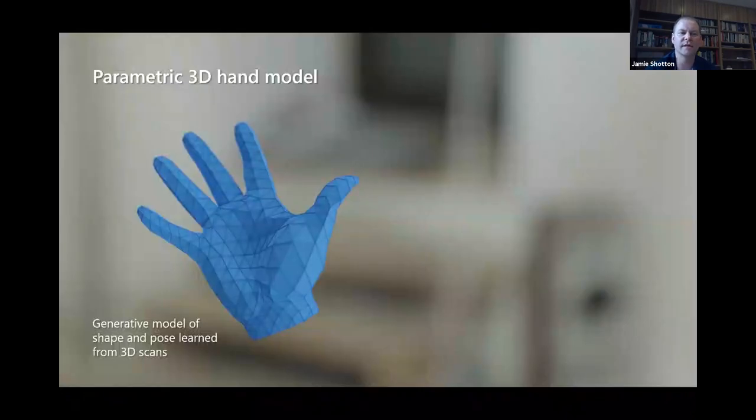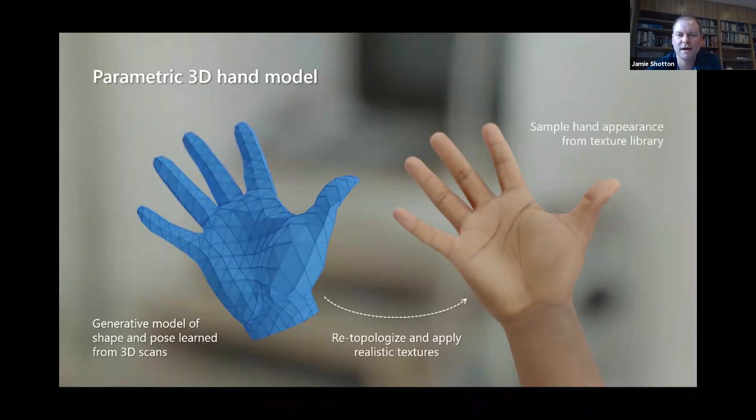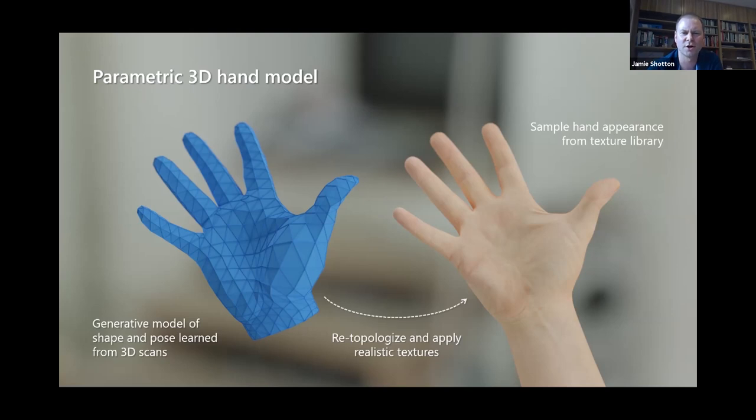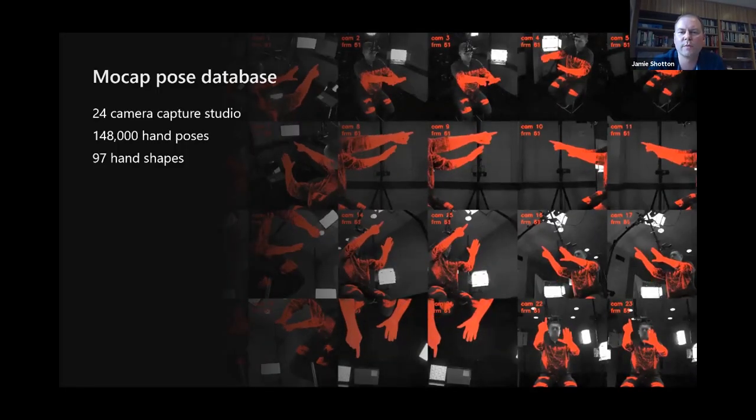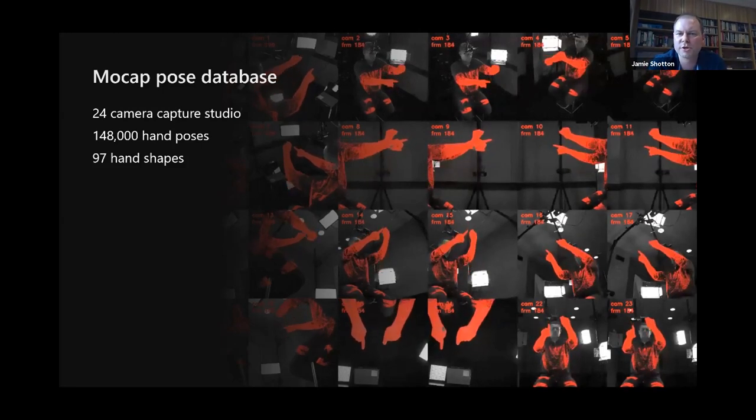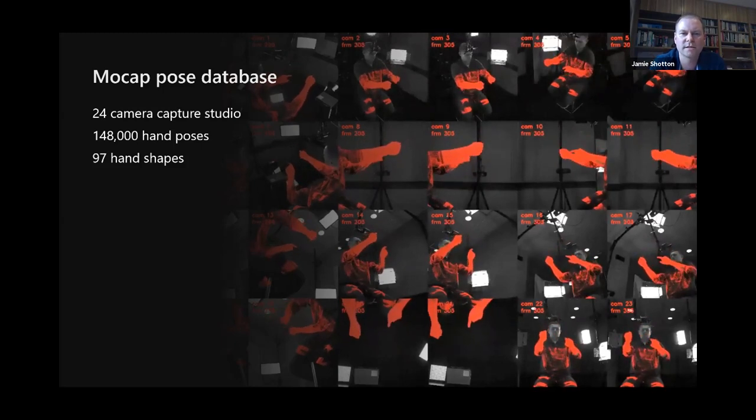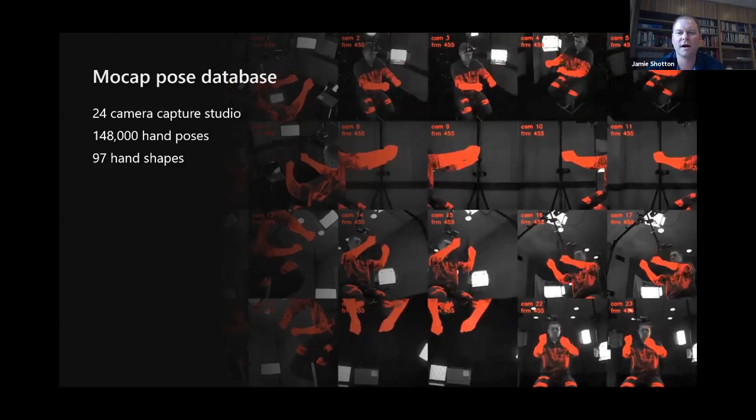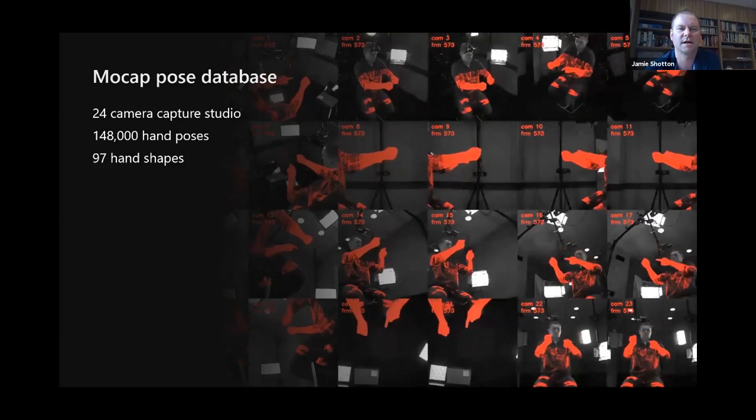And the really nice thing is you can start with the exact parametric hand model that you're tracking against and use that as the basis for generating your training data. And there's several ingredients. First of all, you need to be able to texture this. And again, we can texture this with a diversity of textures from a texture library. Next, you need to be able to pose this realistically. And this is not quite as easy as just randomly permuting the joint angles in your model. You need to do this with care. And so we needed some motion capture data of hands and for this, because motion capture for hands is very hard to come by, we had to create our own capture studio, multi-camera rig. The red points here are overlaying the stereo tracked points in the data.